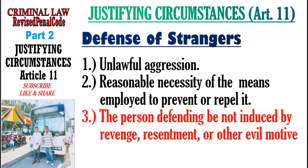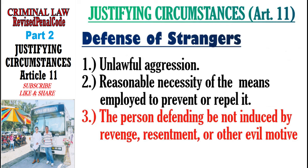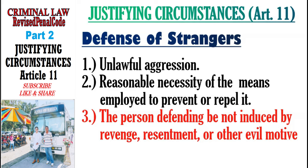The third requirement for defense of strangers is that the person defending must not be motivated by revenge or evil motive. Example: While A was walking, he heard screams and ran toward the sound. A saw K trying to stab X. A resented K because they exchanged fist blows a month ago. A pulled out his knife and stabbed K to prevent him from stabbing X. Here, the third requirement is not present because the person making the defense was induced by revenge. Since the third requirement is absent, the person is criminally liable but will benefit from an incomplete defense of strangers.